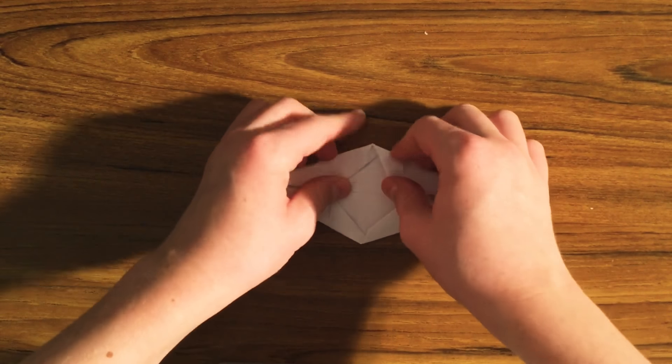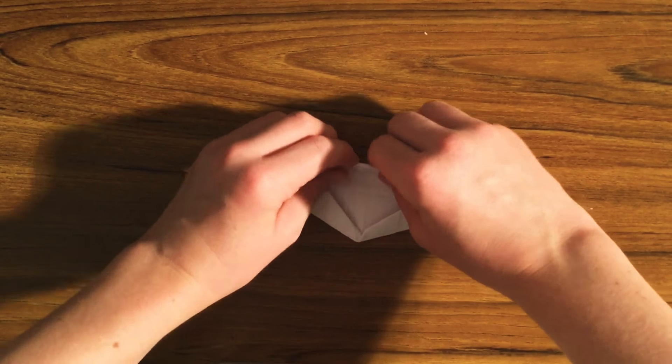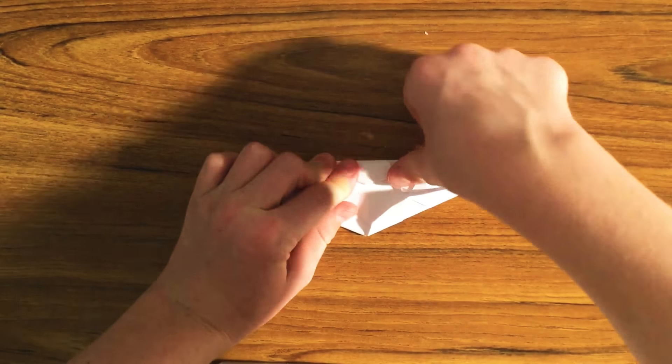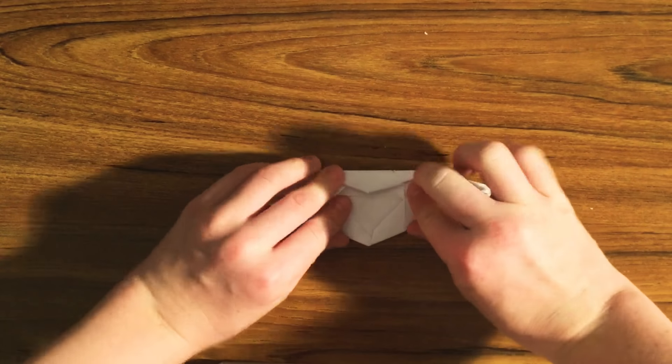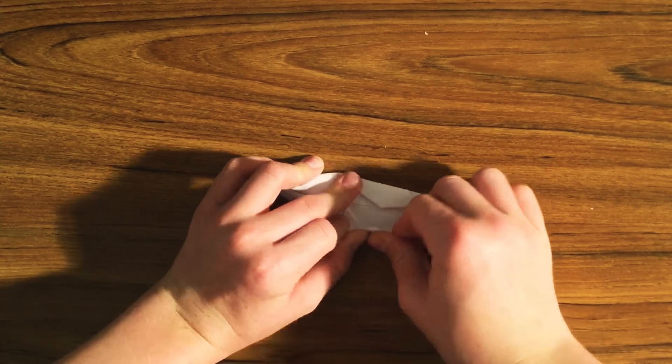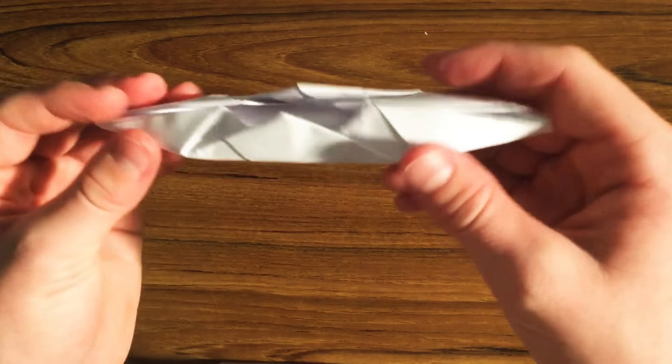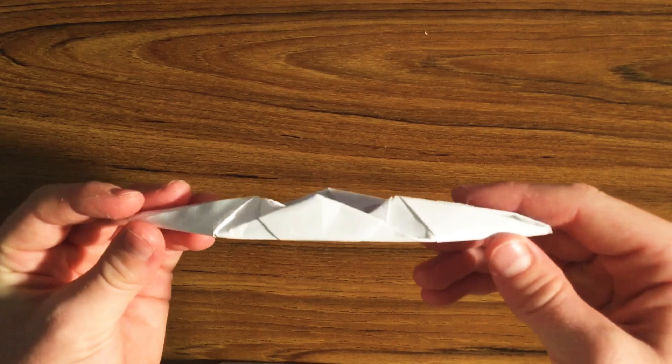Next, just take this corner here and fold it in, do the same thing to the other side, and by this point it should just look like this from the top, this from the side, and that from the bottom.